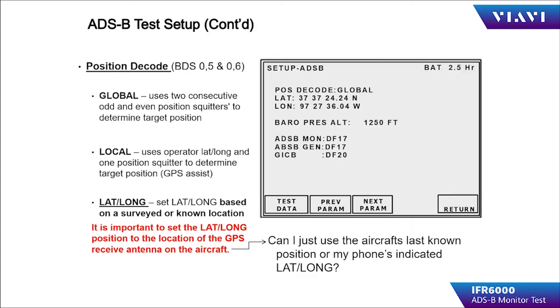ADS-B setup consists of entering the location of the test being performed. This should be as accurately determined as possible and is the actual location of the GPS receive antenna on the aircraft.